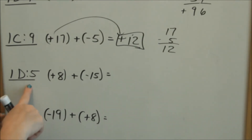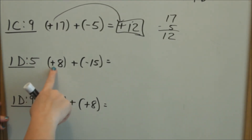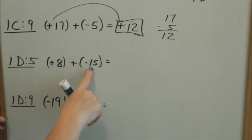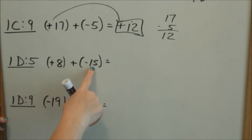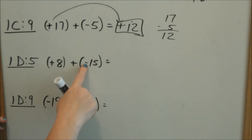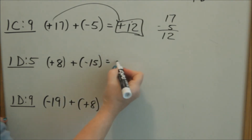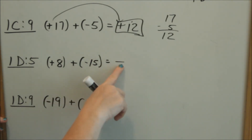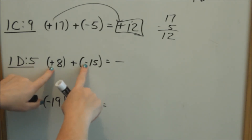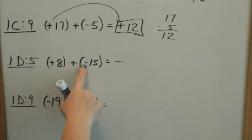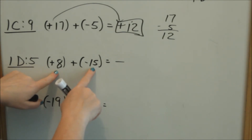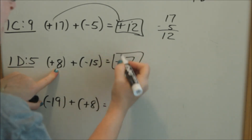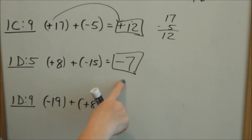Now go to page D number 5. I have 8, but I'm owing 15. If I have 8 and I owe 15, am I going to have money in the end or owe money? I'm still going to owe because my larger number has the negative. When your signs are different, the answer takes the sign of the larger number, and you subtract the two numbers. 15 minus 8 is 7, so the answer is negative 7 — I still owe $7.